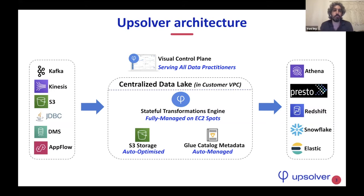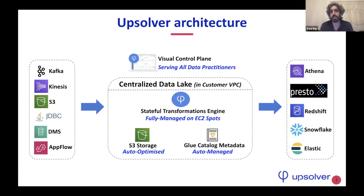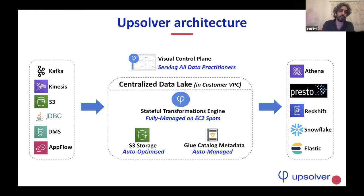Upsolver is a data lake platform dealing with streaming data. If you look at our architecture, you have streaming data coming in on the left — often from a system like Kafka, Kinesis, or possibly files landing on S3. Then it streams out to systems like Presto, Athena, or more traditional data warehouses like Snowflake, Redshift, or Elasticsearch. In the middle, you have an ETL platform that takes the data, populates the data lake, manages the storage layer and the metadata layer. Having all of this centralized together and running in tandem is very important.